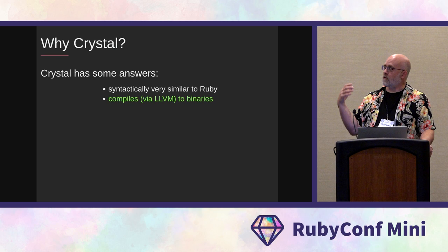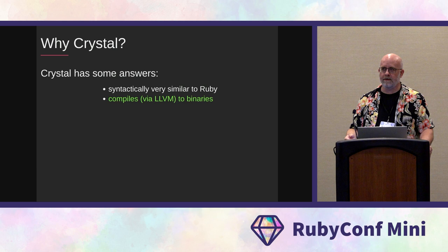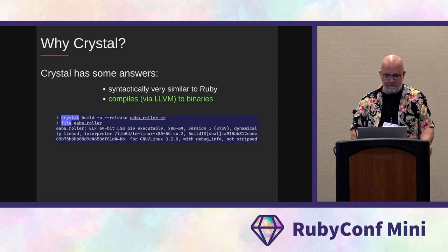Crystal is a compiled language. It compiles your code down to an executable and it's built on top of LLVM. Rust also compiles down to LLVM, so Crystal and Rust share that common layer underneath. This is just a snippet showing that if you build something with Crystal, it is in fact an ELF executable on my system.